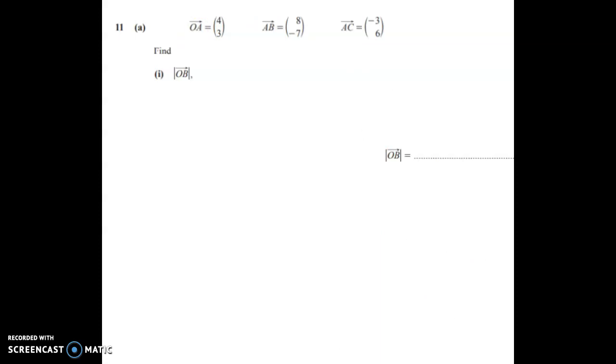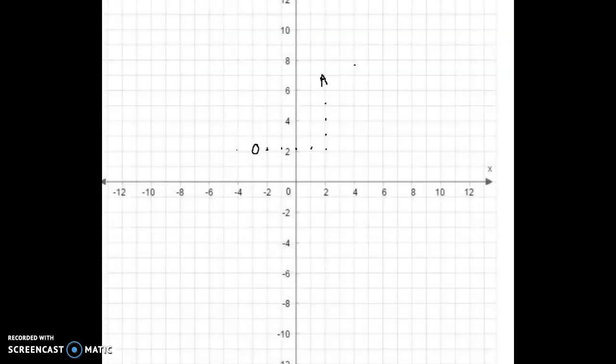A has a column vector of 4, 3, so I'm going to draw that. So I just counted over in accordance with the column vector. One, two, three, four. One, two, three.